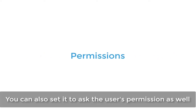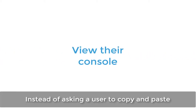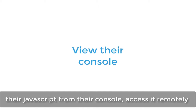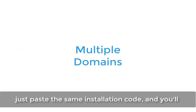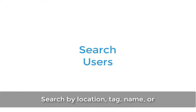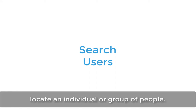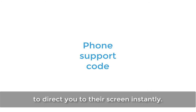You can also set it to ask the user's permission as well. Instead of asking a user to copy and paste their JavaScript from their console, access it remotely to see and fix the errors. If you have multiple domains you want to screen share on, just paste the same installation code and you'll be able to see all the users under one account. Search by location, tag, name, or any other information you've passed in to quickly locate an individual or group of people. Or search for the support code shown earlier to direct you to their screen instantly.